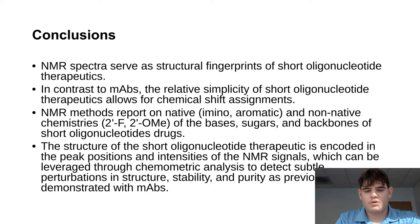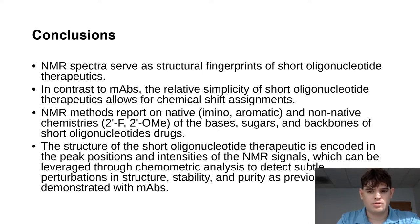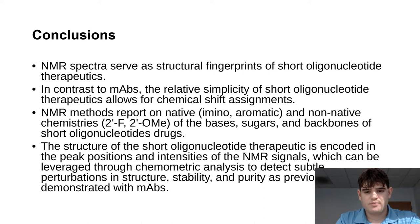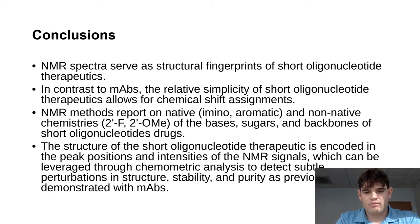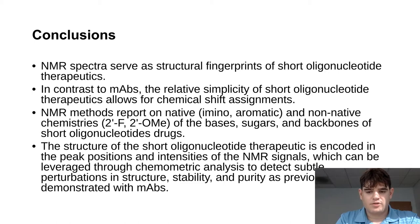In conclusion, I hope I've convinced everyone that NMR spectra can serve as structural fingerprints of oligonucleotide therapeutics. One of the great things about this class of molecules is that their relative simplicity allows for chemical shift assignment — something that is lacking in monoclonal antibody work due to their large size and complexity. These NMR methods can be tailored to report on both native and non-native chemistries, and based on their distribution throughout the oligonucleotide, they provide high-resolution information on structure and dynamics. The structure is encoded in peak positions and intensities, all of which can be leveraged through chemometric analysis to detect subtle perturbations, aiding in the drug development and distribution process.